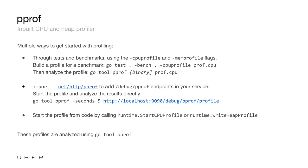There is another option, which is rarely used but might be useful — you can actually start the profile directly from your application itself. You might be debugging something really strange, like a special memory leak that you can't really find, and you need to execute a heap profile at a specific point in time. You can do that by calling runtime.WriteHeapProfile. Similarly, you can also start a CPU profile from the runtime package.